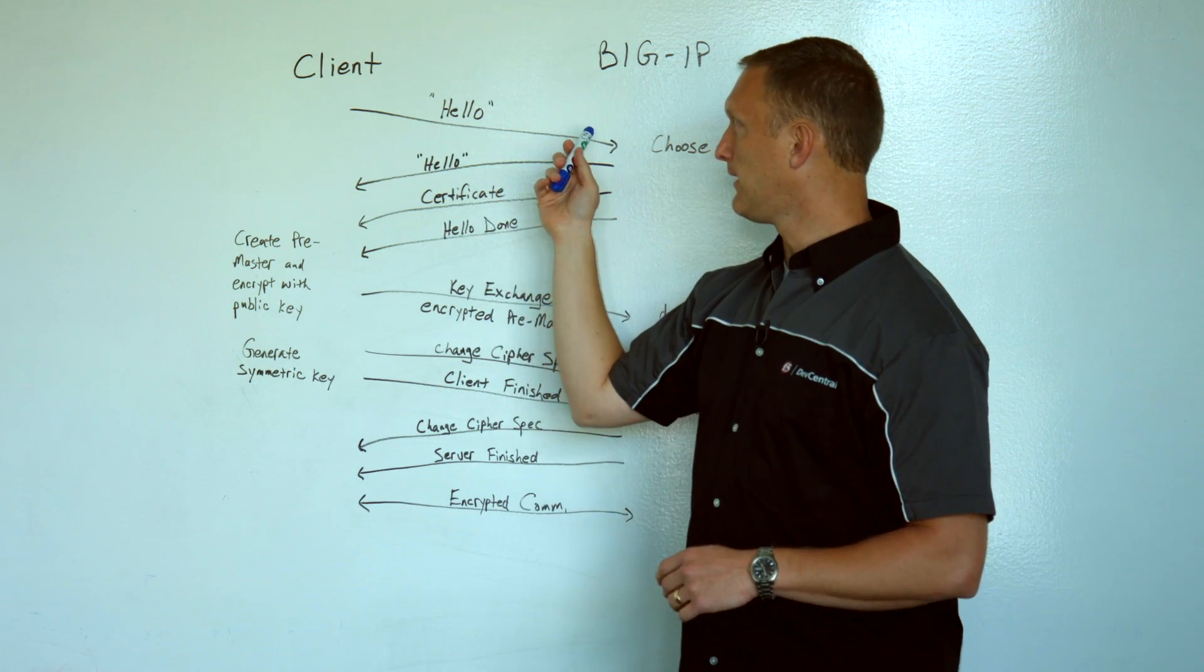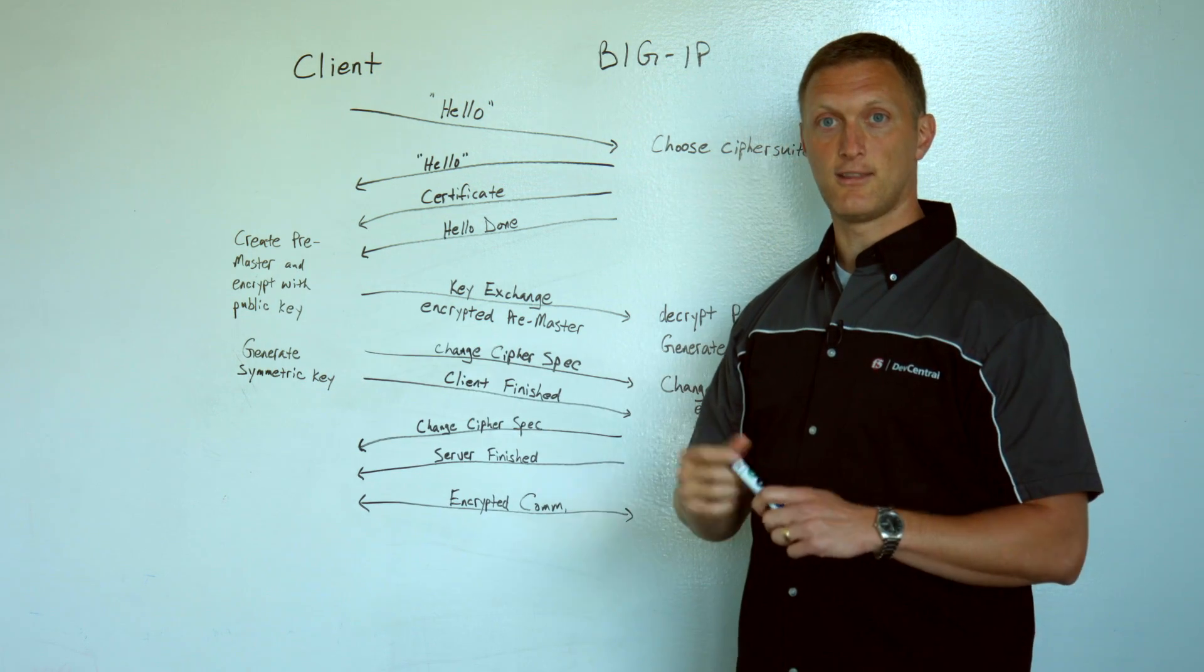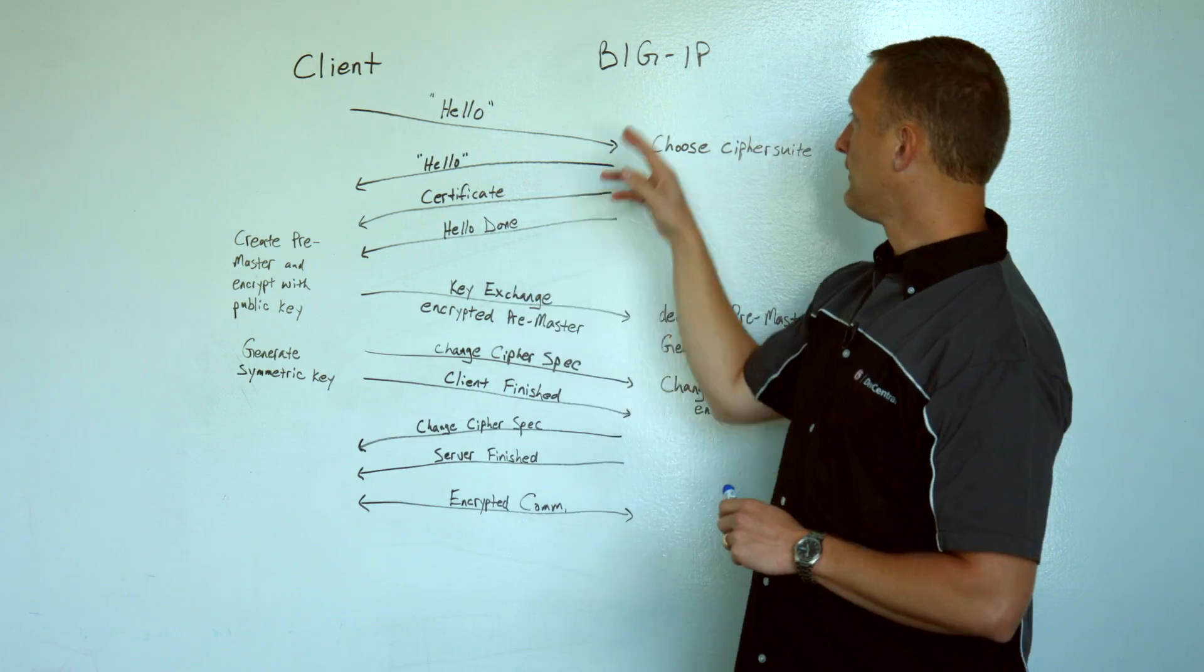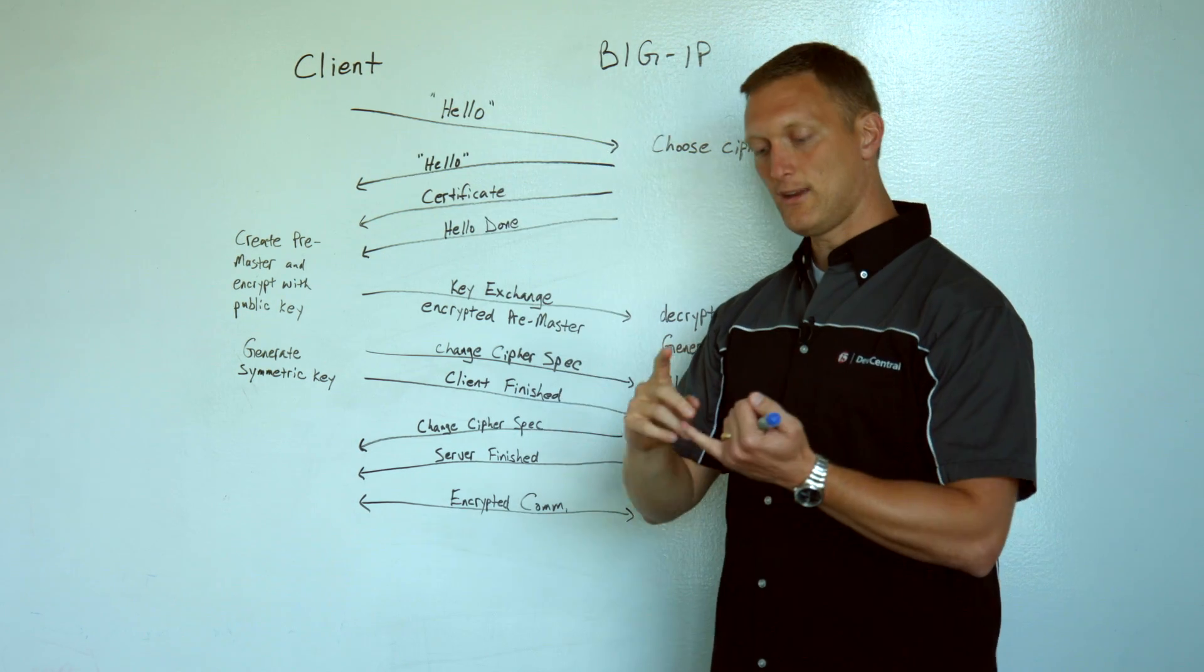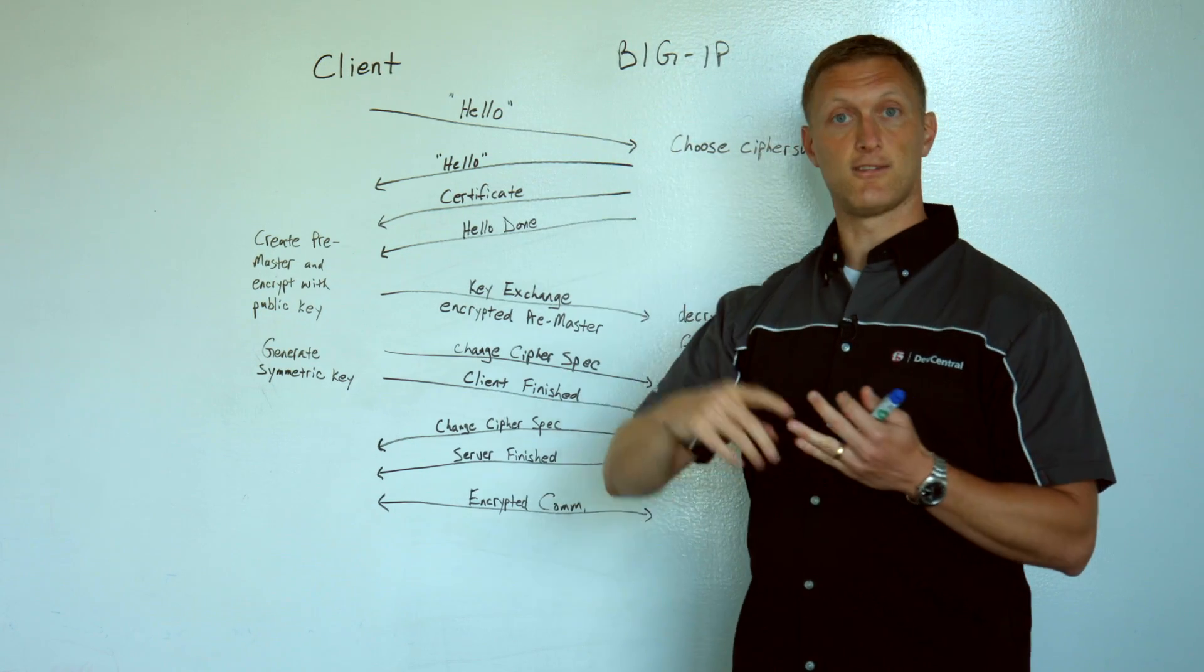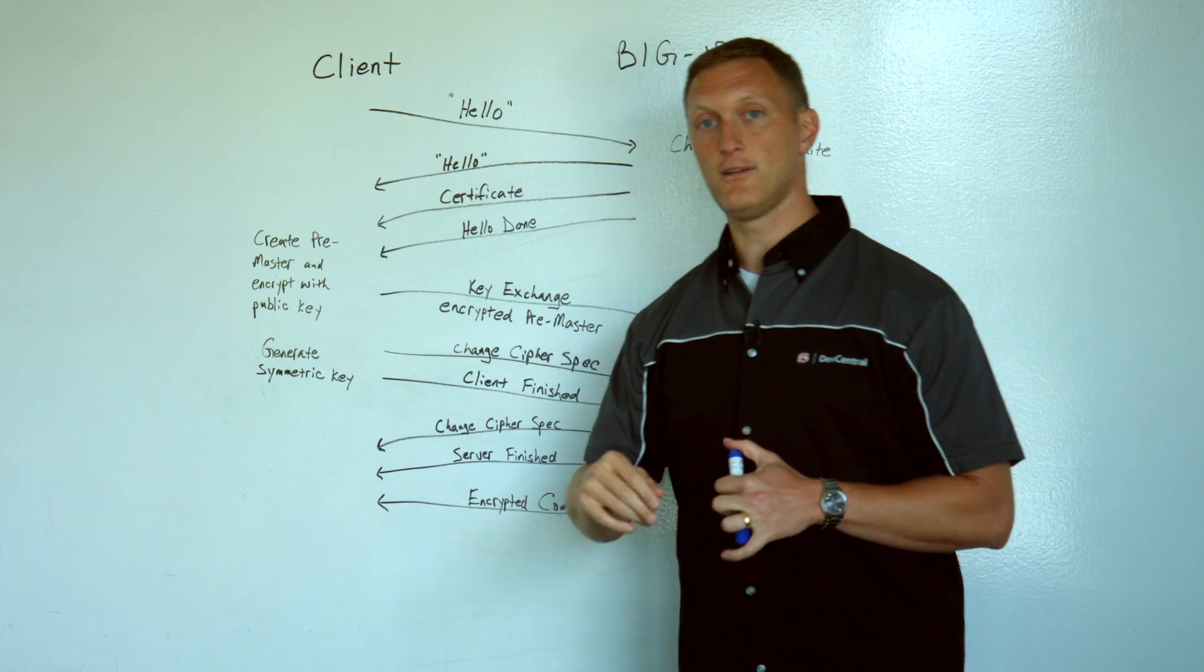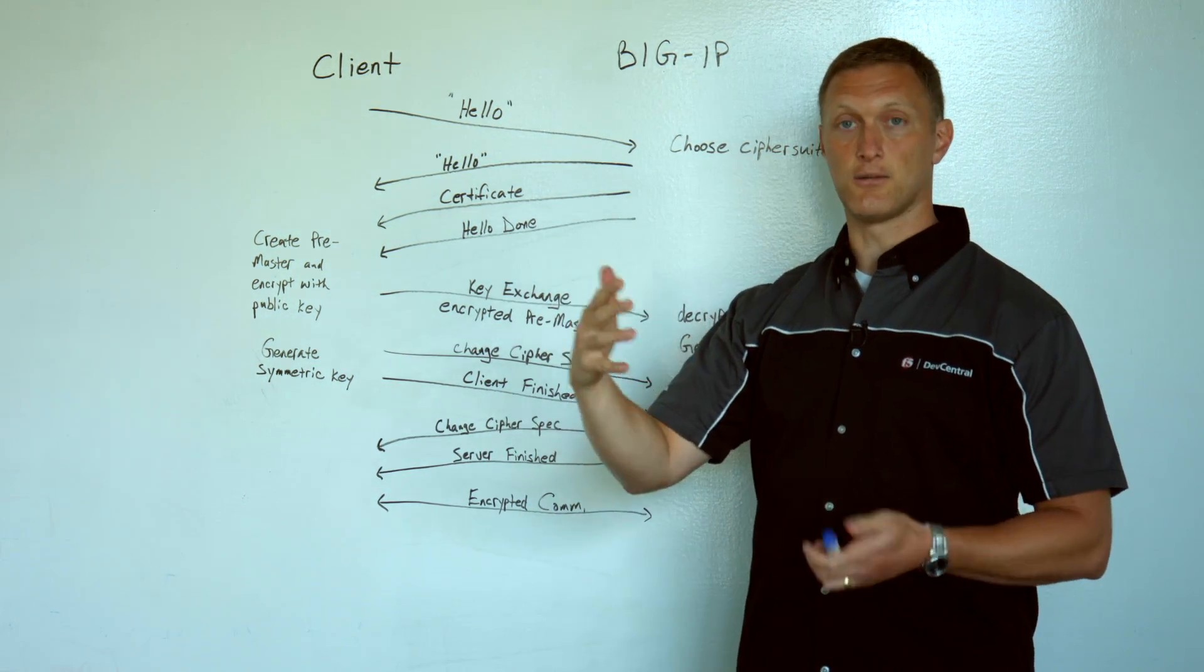The first thing that happens is this client says hello, and it literally is a client hello message. Essentially that's the client saying, hey, I want to establish this secure transaction. So the BIG-IP gets that. As a part of this hello, there's things like the version number of TLS or maybe SSL v3, for example, that is included here.